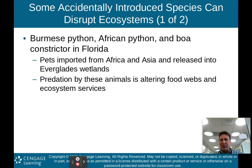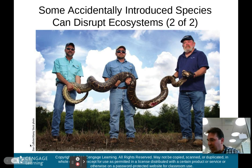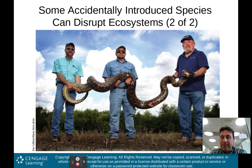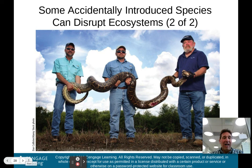Some accidentally introduced species can disrupt ecosystems as well. The Burmese python, African python, and boa constrictors in Florida were pets imported from Africa and Asia and then released into the Everglades wetlands. Predation by these animals is altering food webs and ecosystem services because they shouldn't be there — they're kind of at the top of the food chain. This is a Burmese python caught by these guys in the Florida Everglades, just living there. People just decided they didn't want it as a pet anymore and left it outside — and this is what ends up in the environment, messing up the food webs in the Everglades.